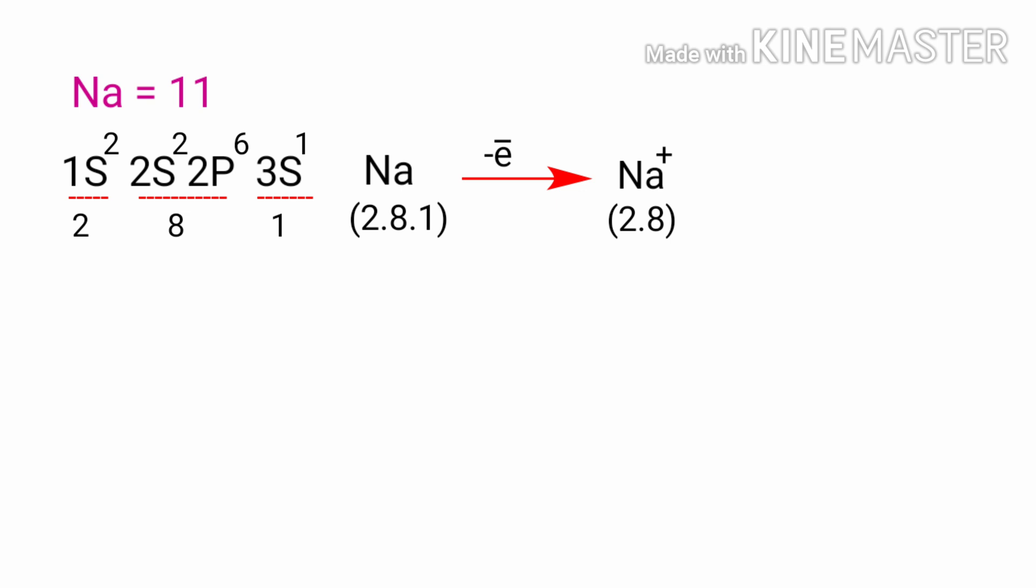If sodium loses an electron, it now has 11 protons, 11 neutrons and only 10 electrons, leaving it with an overall charge of plus one. It is now referred to as a sodium ion.